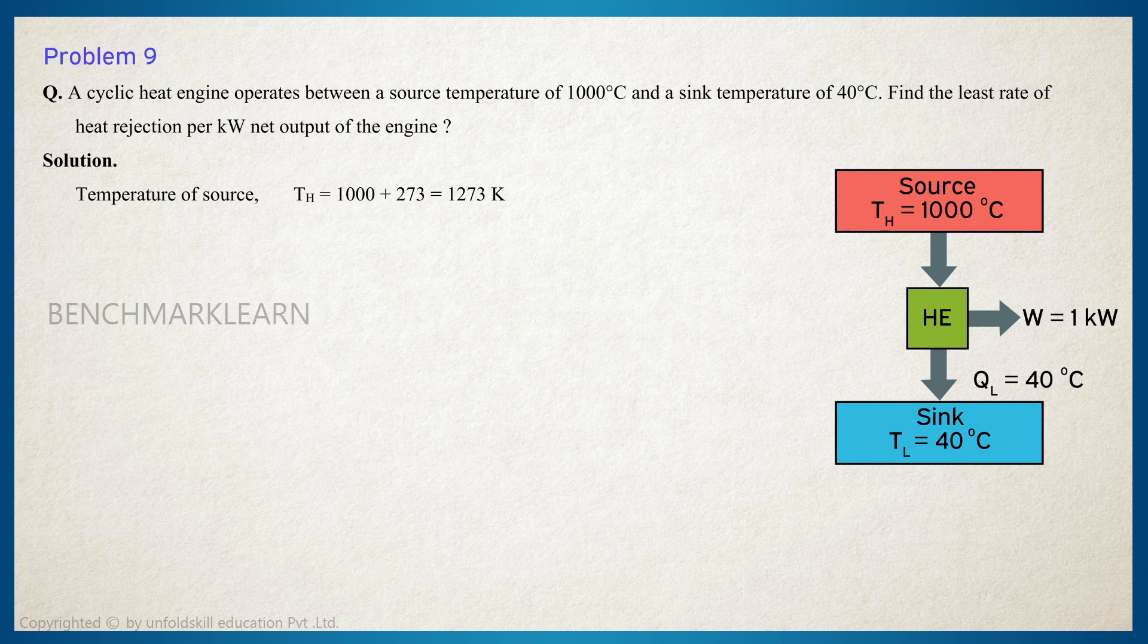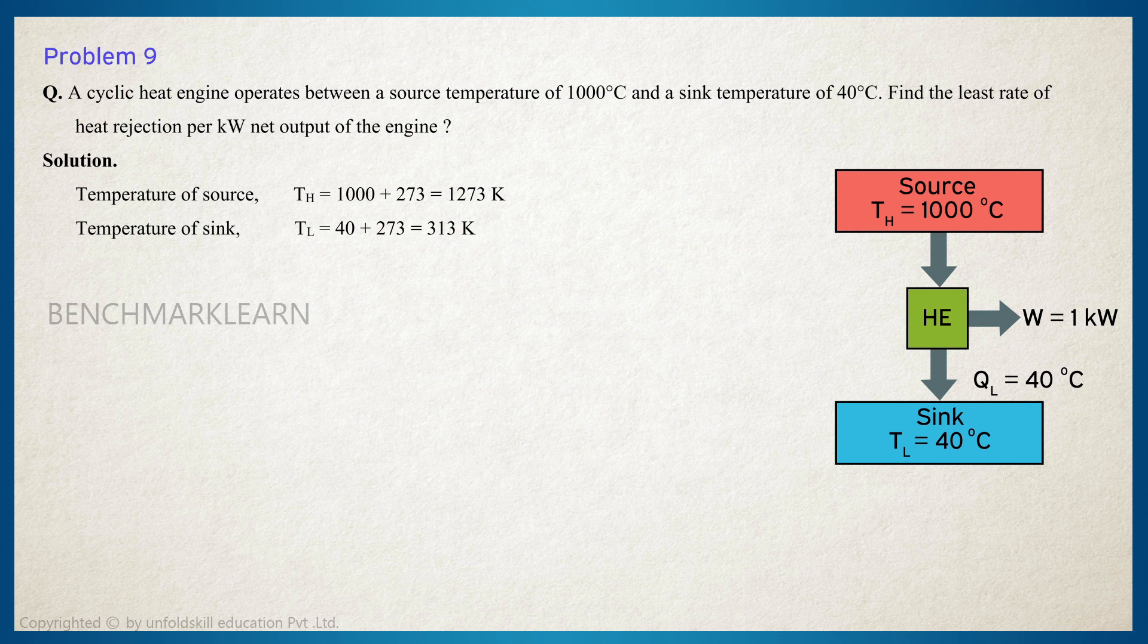The temperature of the source TH is equal to 1000 plus 273, which is equal to 1273 Kelvin. The temperature of the sink TL is equal to 40 plus 273, which is equal to 313 Kelvin.